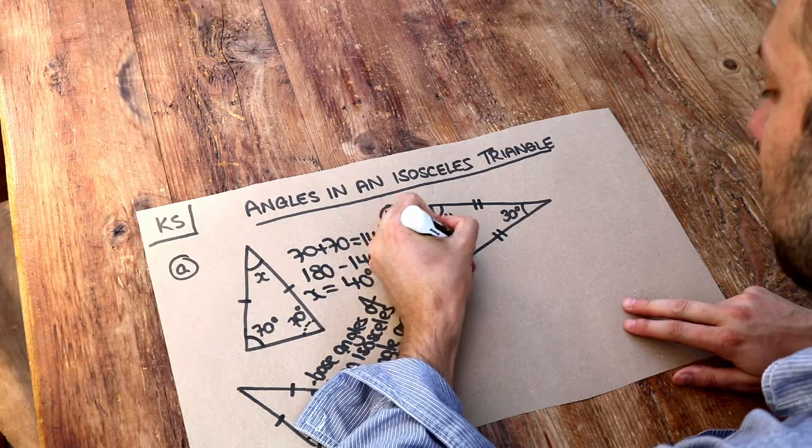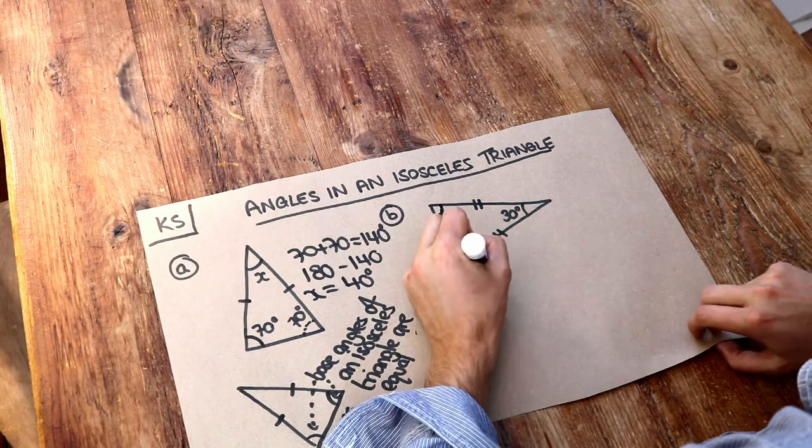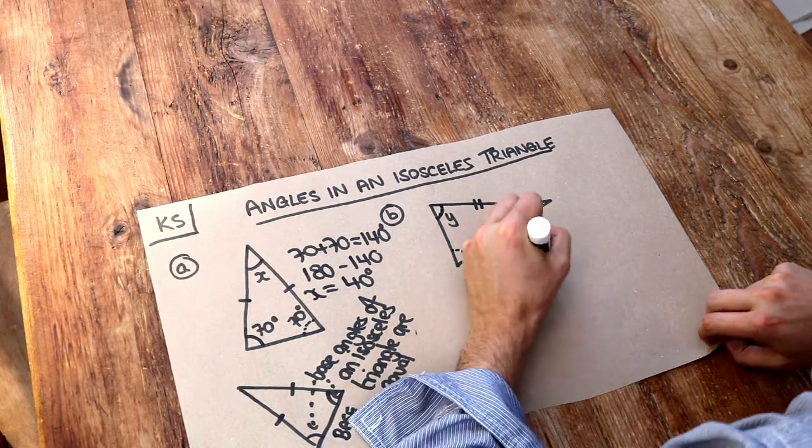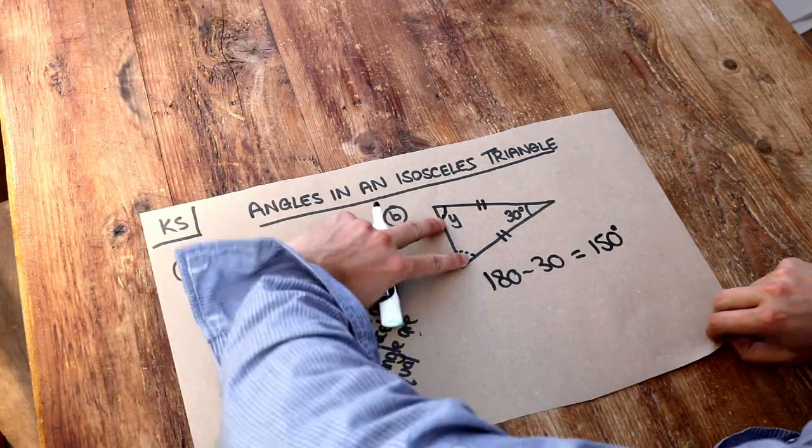Now if these two angles are the same here, then what we could do is we could subtract that 30 degrees from 180 and that means the remaining angles add up to 150 degrees.